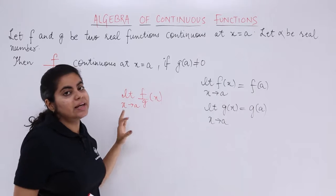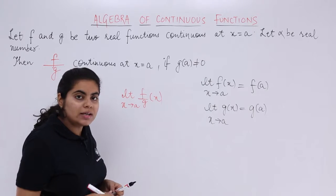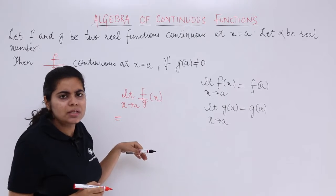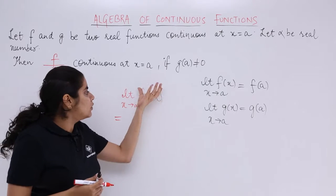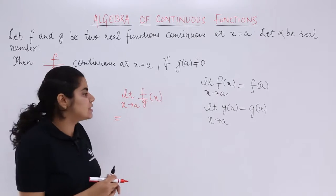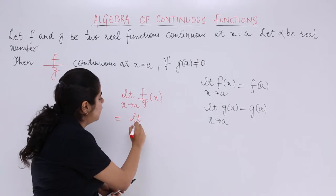Limit f upon g(x) at x tends to a. Now what is to be followed next? To be followed next is the separation of the limits because you have numerator, you have denominator. Let's put limit on both these sides because it is allowed, it is the property.